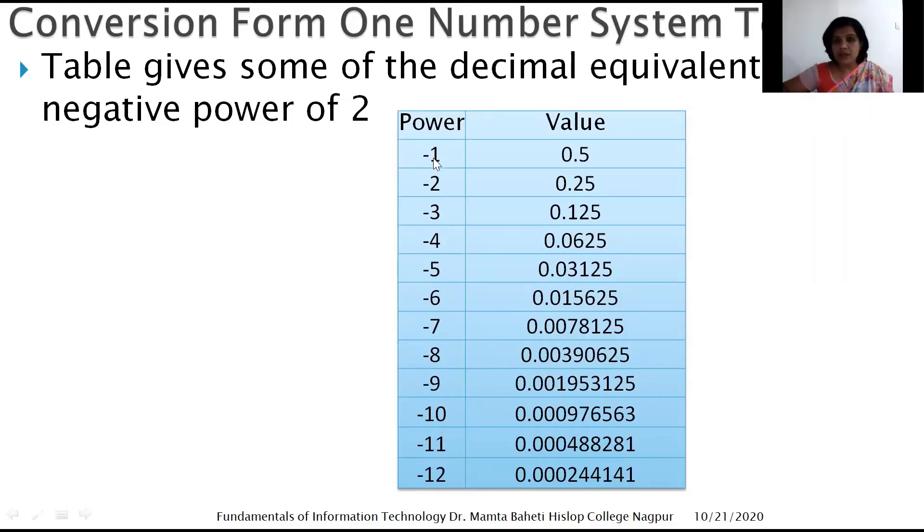2⁻¹ gives 0.5, and likewise the table continues for negative powers of 2 — keeping this table handy lets you compute answers quickly.